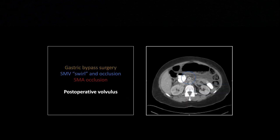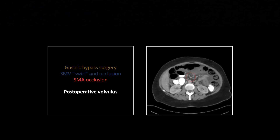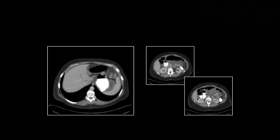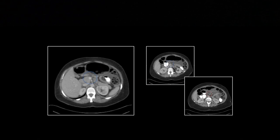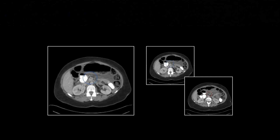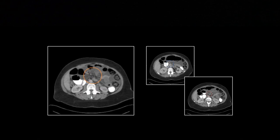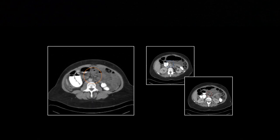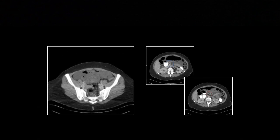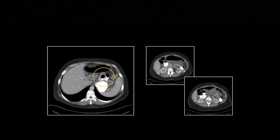Another gastric bypass case where the SMV and SMA both snuff out — visible because we have IV contrast. The SMV is lost, and just distal to that, the SMA is lost. Note also the cicatricial appearance of the small bowel — it's all being pulled together into one place, suggestive of a closed-loop obstruction.